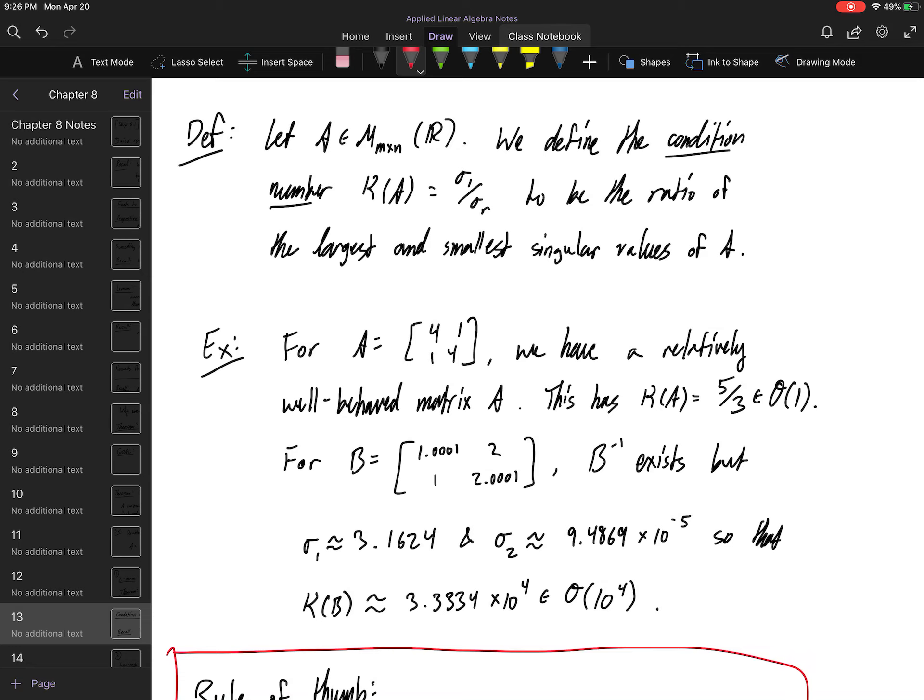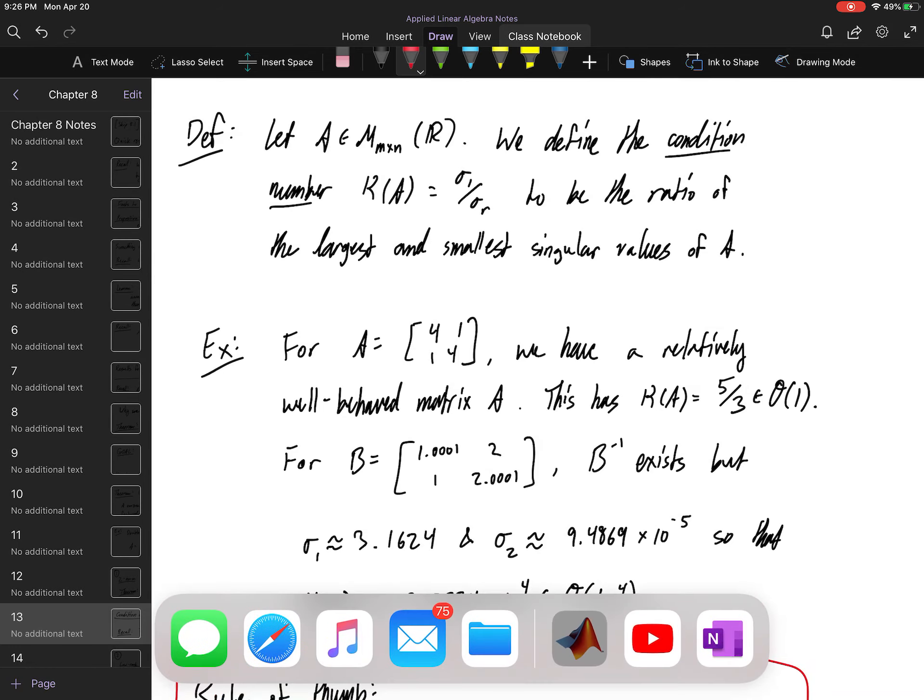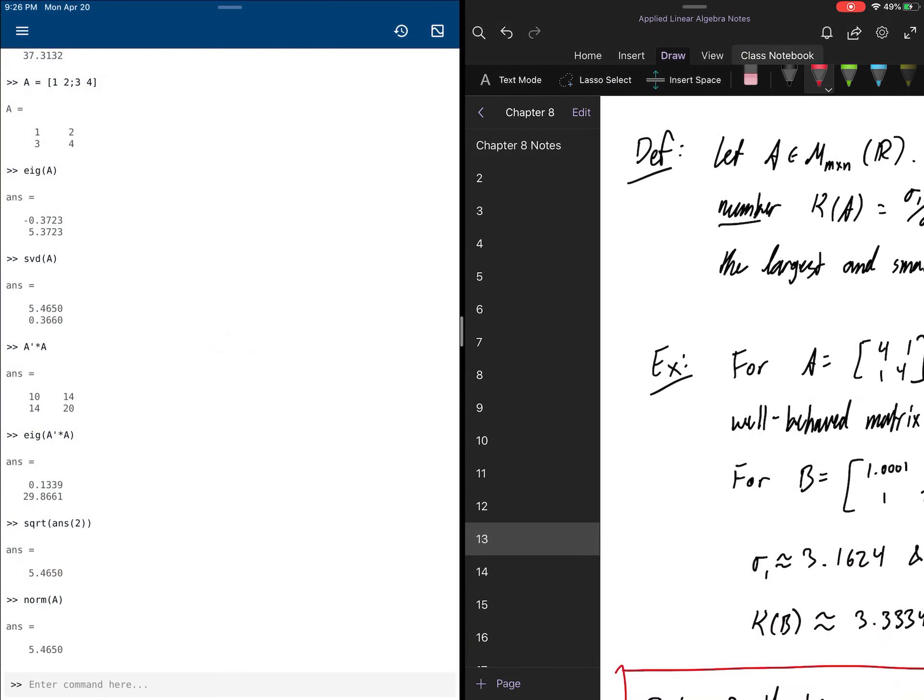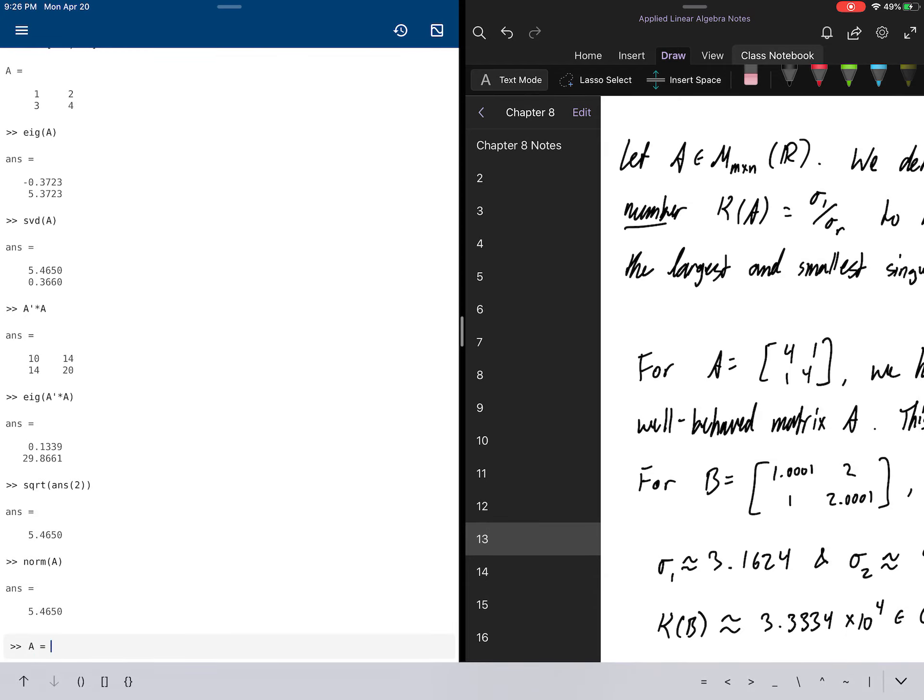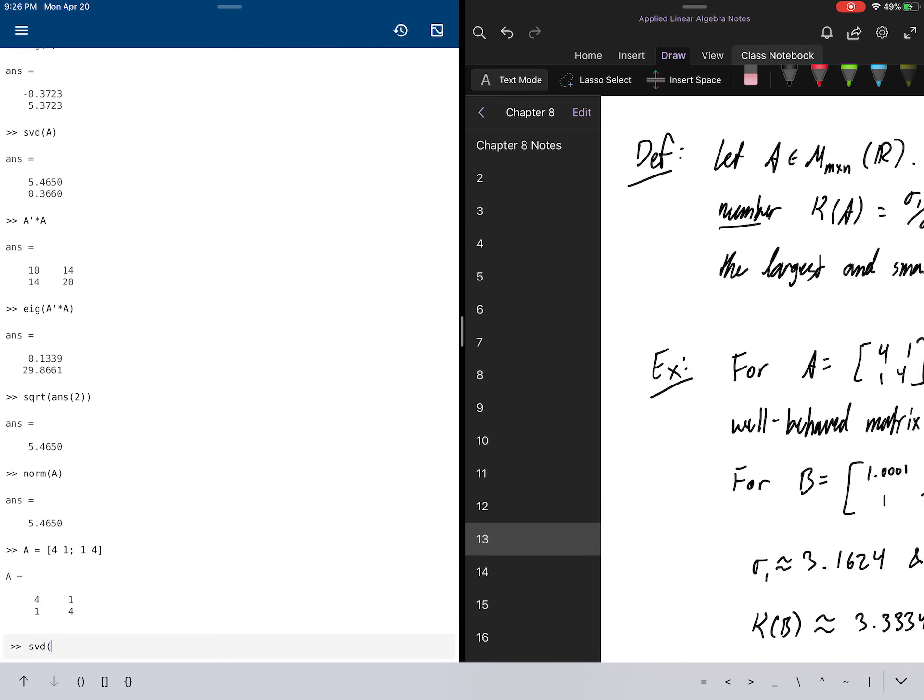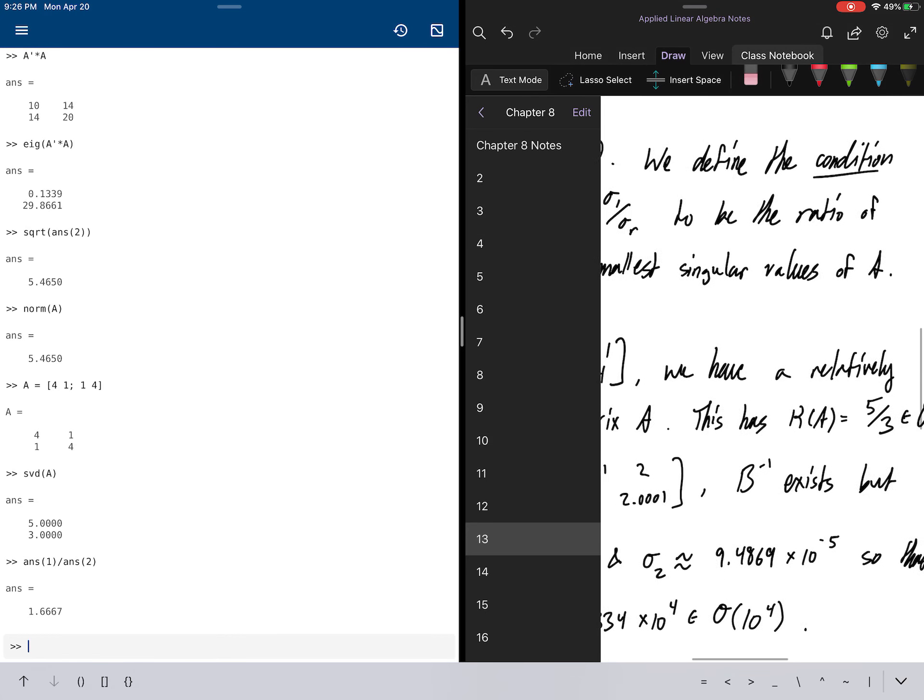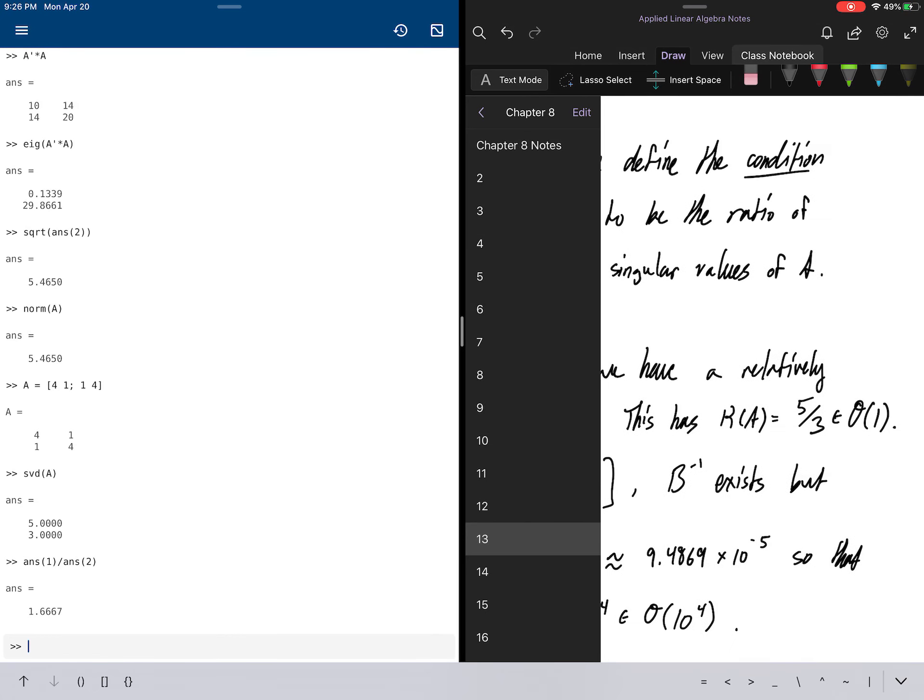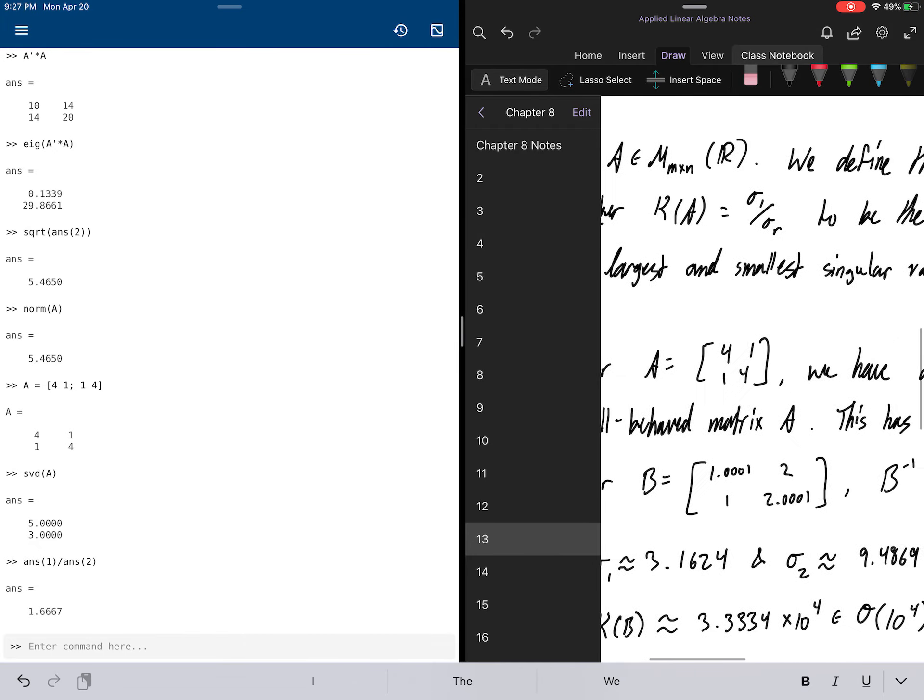Now this is kappa of A and it's the ratio of the largest singular value to the smallest singular value. Okay. In that order, right? Sigma one over sigma r. And as an example, this matrix A, check out matrix A here. A is equal to 4 by 1 by 1 by 4. And we say, okay, great. We have a relatively well-behaved matrix. How do I know this? I can ask for the singular value decomposition and say, okay, answer one divided by answer two here. This is going to be a ratio of about 1.667 or 6667, right? And that's relatively well-behaved, right? Because this guy is on the order of a constant, right? There's only, it's not just a constant. It has no orders of 10 associated with it apart from 10 to the zero.